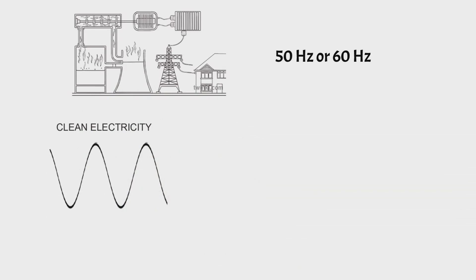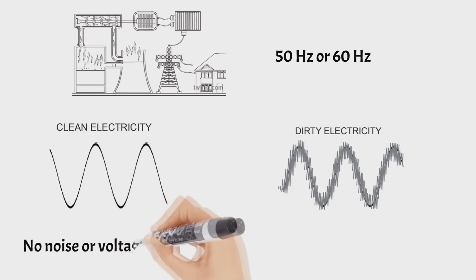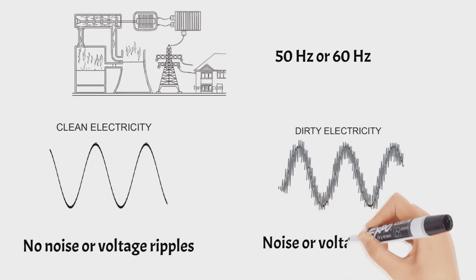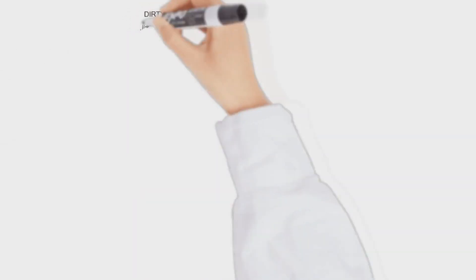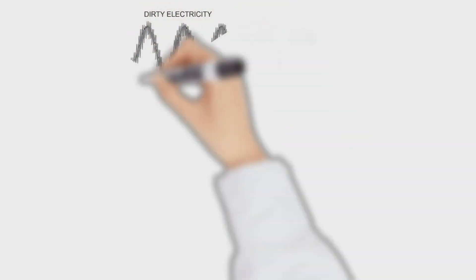This dirty waveform has lots of noise or voltage rebels. Clean electricity does not have any voltage rebels or noise, however dirty electricity has voltage rebels or noise. We need to understand where dirty electricity comes from.